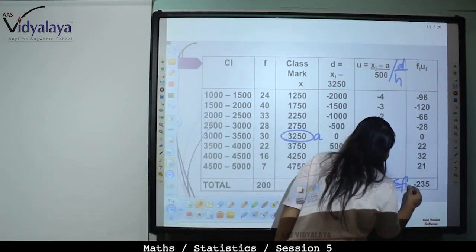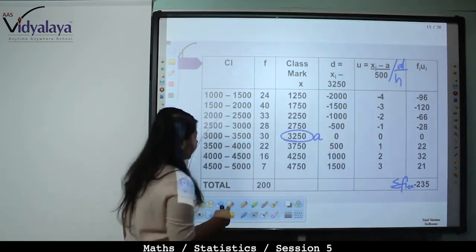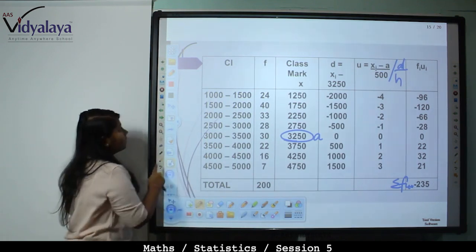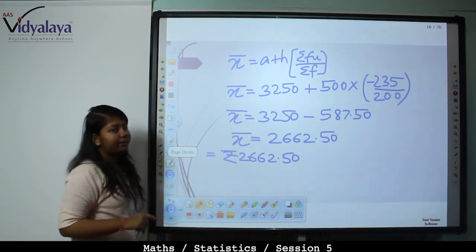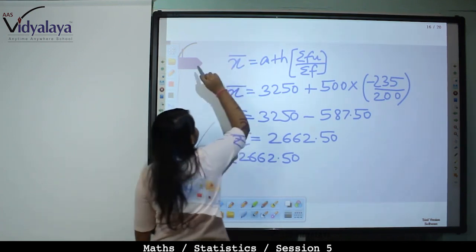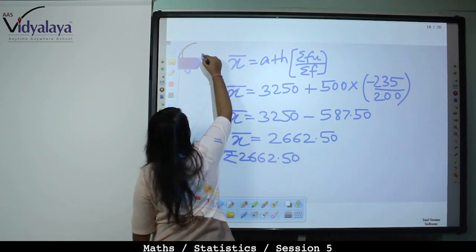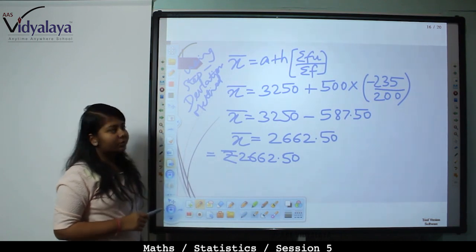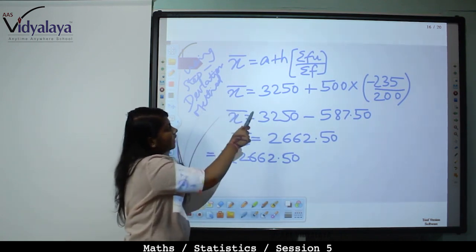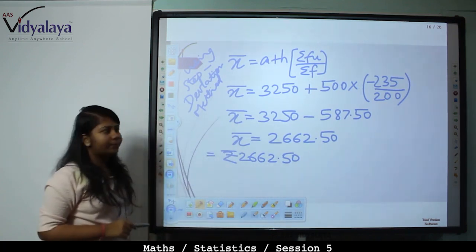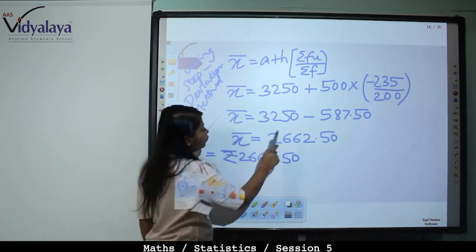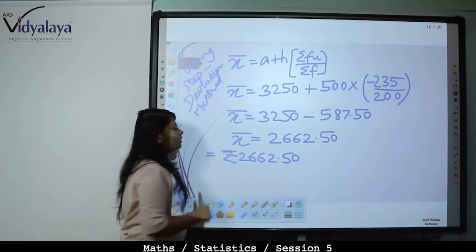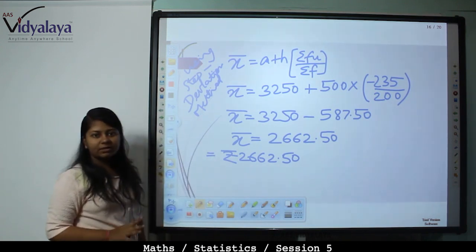Summation FU equals minus 235 and summation f equals 200. Using the step deviation method: x-bar equals A plus h into (summation FU upon summation f). So x-bar equals 3250 plus 500 into (minus 235 upon 200), which equals 2662.50. Therefore the mean monthly expenditure of the household is rupees 2662.50.